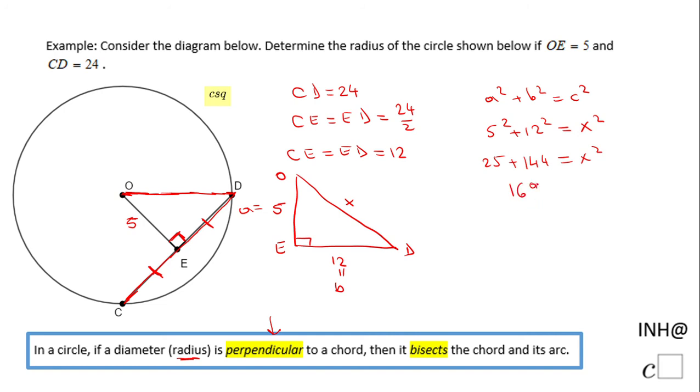5 squared is 25, 12 squared is 144, equals x squared. 25 plus 144 is 169, and for finding x we're going to have to take square root of 169. And since this is a measure, I'm not going to put plus and minus, so just square root of 169, that will be 13. This x here is nothing else than the radius, and the radius of the circle is 13.